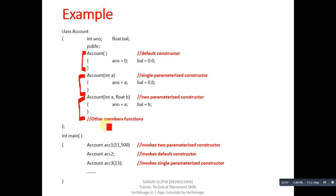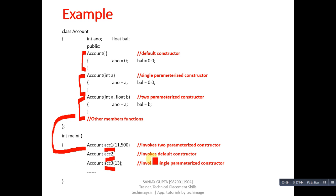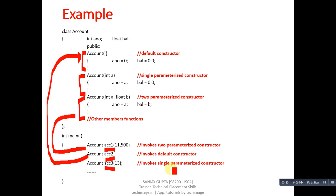Inside the main function, three objects have been created: ACC1, ACC2, and ACC3. ACC1 invokes the two-parameterized constructor, so that calling statement is linked to that definition. ACC3 has only one argument, so it invokes the single parameterized constructor and is linked to the second definition. We can create any number of objects in main, and whenever we create an object, we can pass the desired number of arguments — as per the arguments passed, a particular constructor will be invoked automatically.